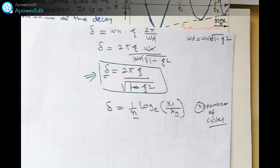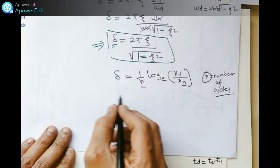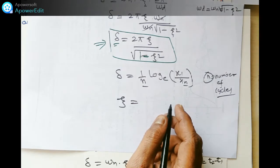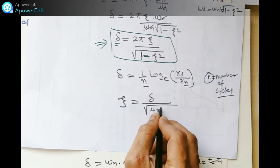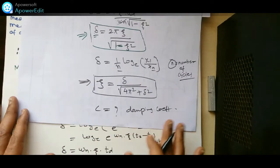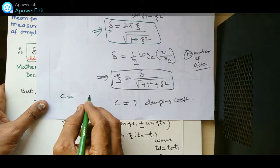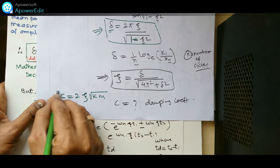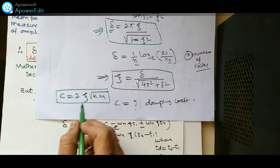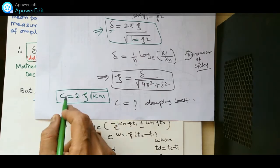Converting the equation by squaring both sides, we get ζ in terms of δ: ζ = δ / √(4π² + δ²). This formula lets us calculate the damping factor if we know δ. To find the damping coefficient c, we use: c = 2ζ·√(k·m), where k is the spring stiffness and m is the mass.